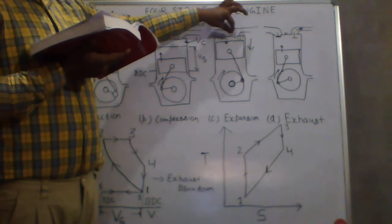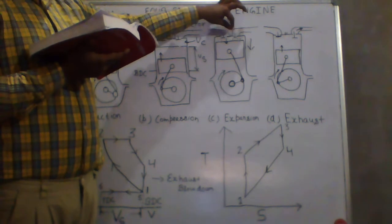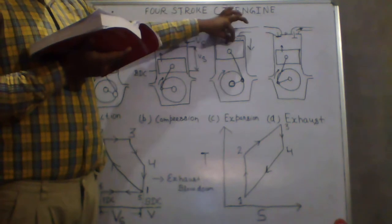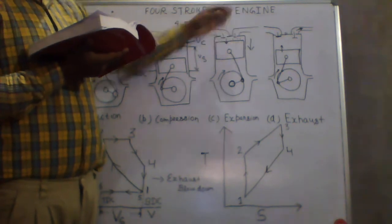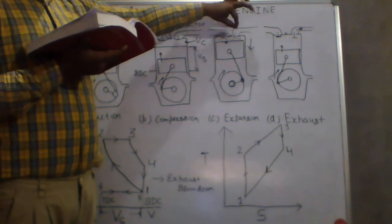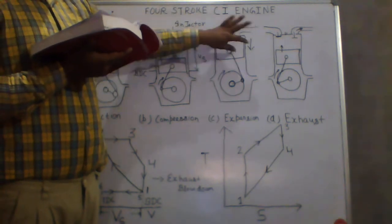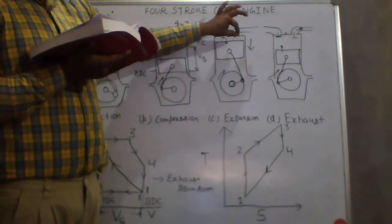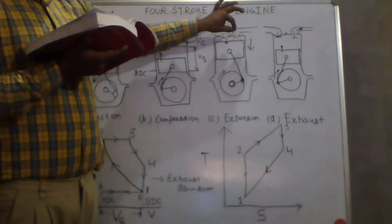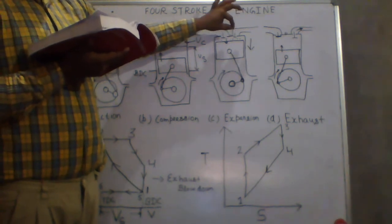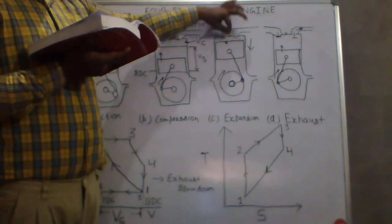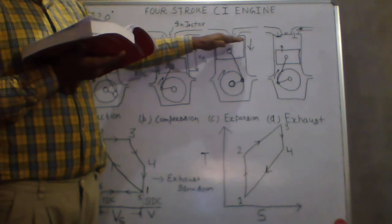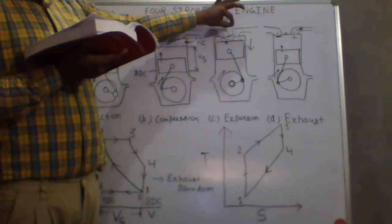The rate of injection is such that combustion maintains constant pressure in spite of piston movement. We inject fuel in such a way that when the piston moves downward, the pressure within the cylinder remains constant despite the fuel injection. So heat is assumed to have been added at constant pressure — this is an important point to note.